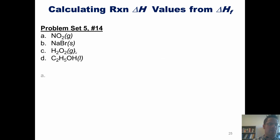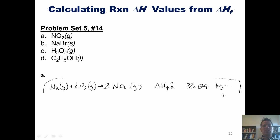Let's start with compound A, NO2 or nitrogen dioxide. If we look this up in Appendix C, you'll note that forming NO2 gas has an enthalpy of formation of 33.84 kilojoules. That is the final answer.